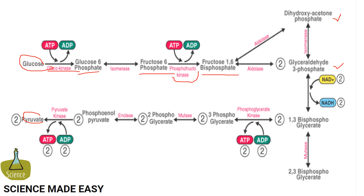In the fifth step, the enzyme triose phosphate isomerase converts dihydroxyacetone phosphate into glyceraldehyde 3-phosphate, which is the substrate in the successive steps of glycolysis.